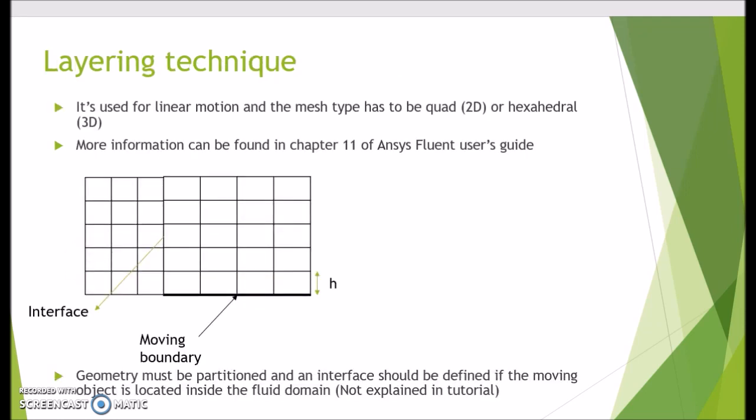The first technique is called layering, which is basically used for linear motion like a piston in a cylinder. The restriction would be the mesh type has to be quad in 2D and hexahedral in 3D, so you cannot use it for any other kind of mesh, and that's the limitation of this technique.